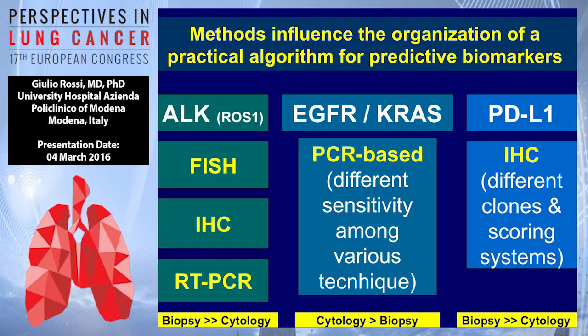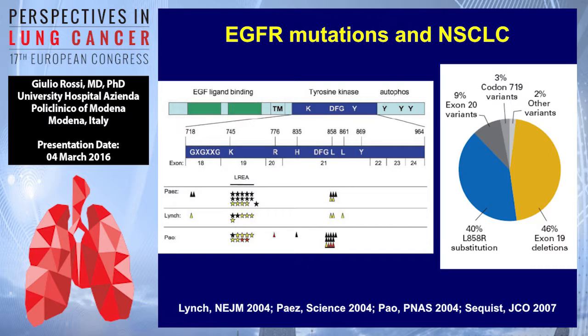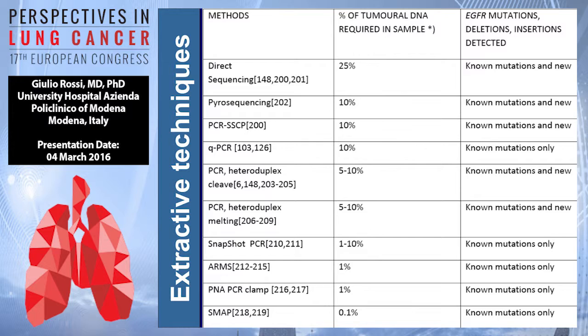For PD-L1, we know that immunohistochemistry is the method, at least for now. We have different clones, different systems, different platforms, and biopsy is much better than cytology, particularly smear cytology. Tests can also have different sensitivity to detect EGFR mutations in non-small cell lung cancer — there are common and uncommon mutations that respond to EGFR TKI. It's important to define the relationship between the biologist and pathologist to determine the right tumor tissue for PCR determination.